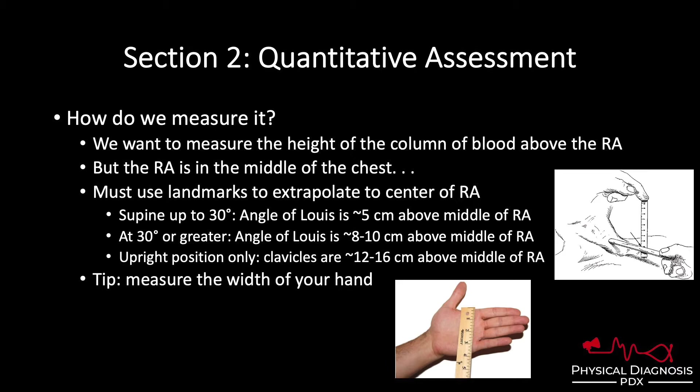If we figure out how high that meniscus is above a landmark and we know how high that landmark is above the right atrium, then it's simple mathematics to decide how high that column is above the right atrium. The angle of Louis is one such landmark, classically said to be five centimeters above the right atrium in any position. A 2002 study used CT imaging and trigonometry to determine the distance between the angle of Louis and the right atrium in various positions. It turns out five centimeters is correct, but only in the supine position up to about 30 degrees. Beyond 30 degrees, it's more like 8 to 10 centimeters above the right atrium. The clavicles are another landmark that can be used, but only in the upright position where they're 12 to 16 centimeters above the right atrium. If we can figure out how high the column is above these landmarks, it's a simple correction factor to determine what the JVP is.